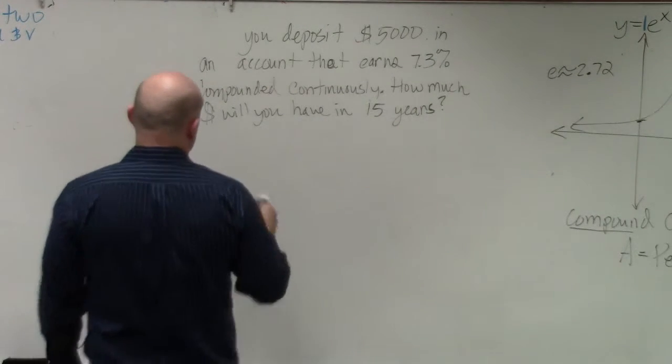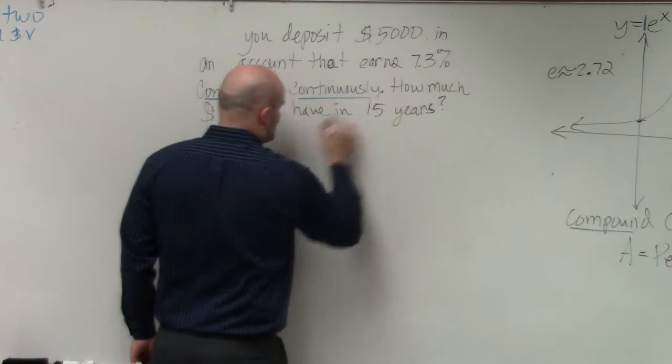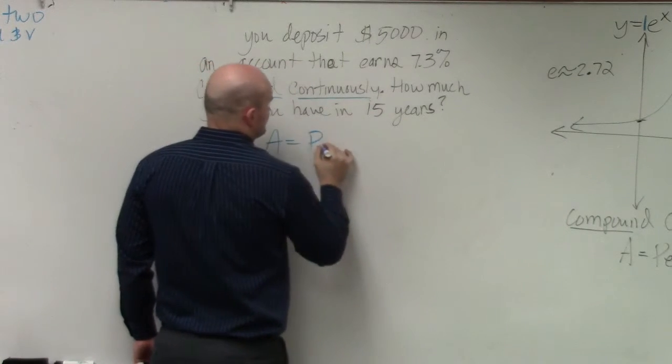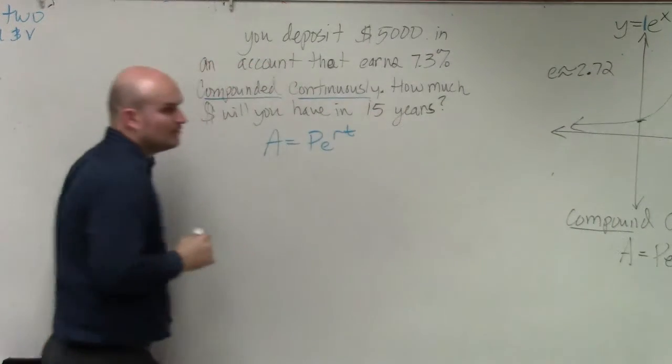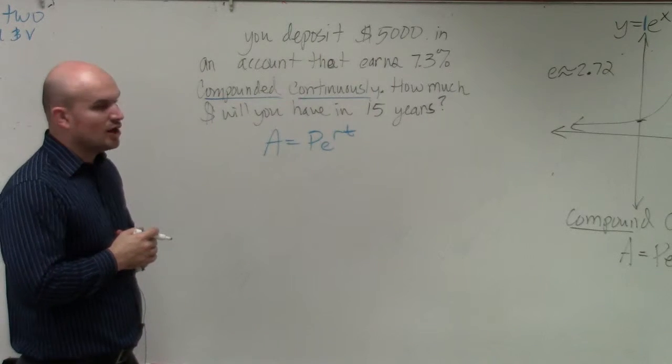So whenever you're reading through a problem and you see compounded continuously, you're going to write this down: A equals p times e to r of t.